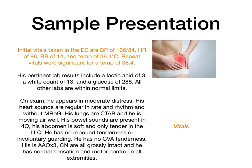Once I'm finished with the subjective, I jump into my objective. Initial vitals in the ED: blood pressure 136 over 84, heart rate 98, respiratory rate 14, and temp 38.4 degrees Celsius. Repeat vitals were significant for a temperature of 38.4 degrees Celsius — everything else was within normal limits. Pertinent labs: lactic acid of 3, white count of 13, glucose of 288. All other labs are within normal limits. On exam, he appears in moderate distress. Heart sounds are regular in rate and rhythm without murmurs, rubs, or gallops. Lungs clear to auscultation bilaterally, moving air well. Bowel sounds present in all four quadrants; abdomen soft, tender only in the left lower quadrant. No rebound tenderness, involuntary guarding, or CVA tenderness. He's alert and oriented times three, cranial nerves grossly intact, normal sensation and motor control on all extremities.